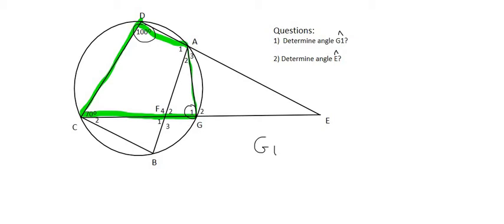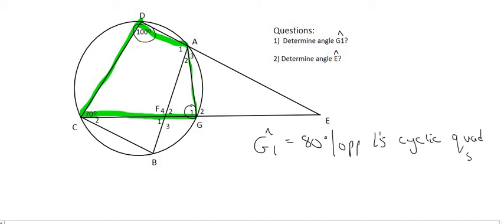and so straight away we can say that G1 is equal to 80 degrees because of the opposite angles of a cyclic quad. And then some teachers will add supplementary over there. Supplementary means that they add up to 180.